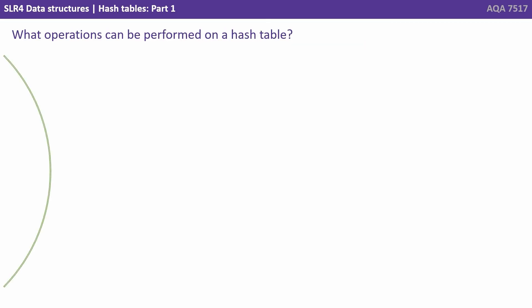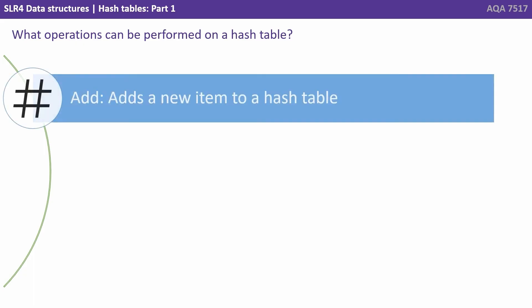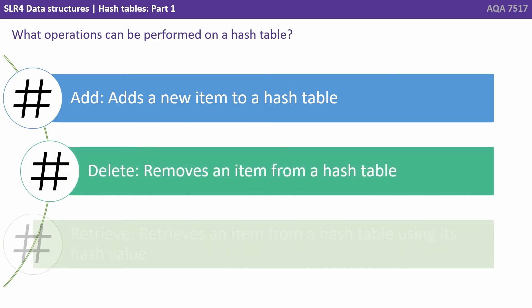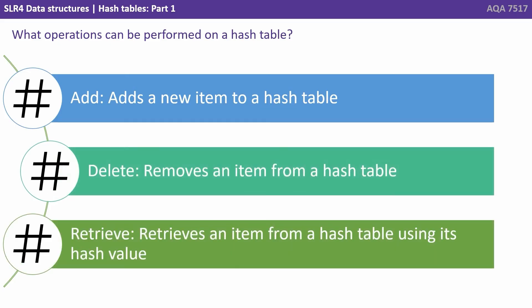There are three main operations which can be performed on a hash table. Add — adds a new item to a hash table. Delete — removes an item from a hash table. And Retrieve — retrieves an item from a hash table using its calculated hash value.